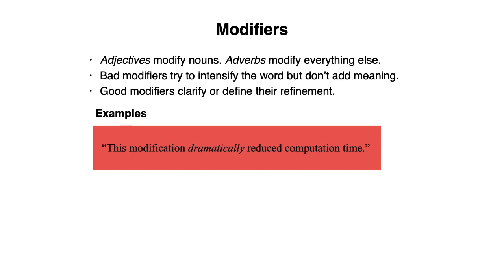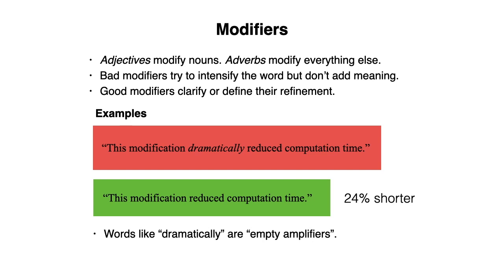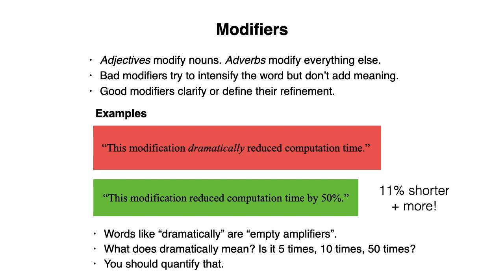What about this example? This modification dramatically reduced computation time. Words like dramatically are empty amplifiers. They do no harm, but they also don't help much. So it's shorter to just say, this modification reduced computation time. Now you might be thinking that the word dramatically gave some notion of the degree of reduction in computation time. But this is rather subjective. What does dramatically mean? Is it 5 times, 10 times, 50 times? You should quantify that. If you wanted to do so, you could say, this modification reduced computation time by 50%. Now it seems like it's only 11% shorter, but it prevents you from quantifying that later on in the paragraph. So it actually saves even more space.